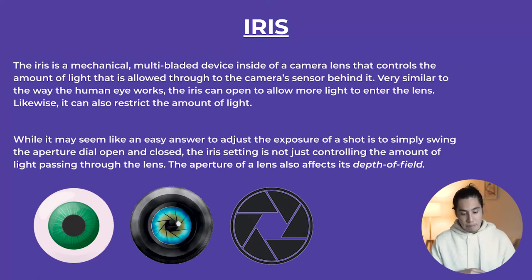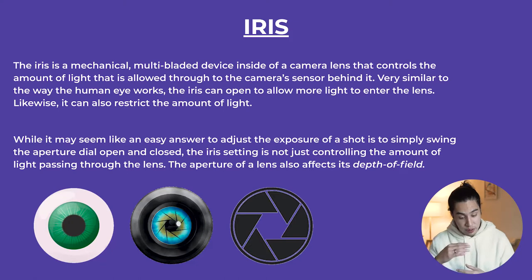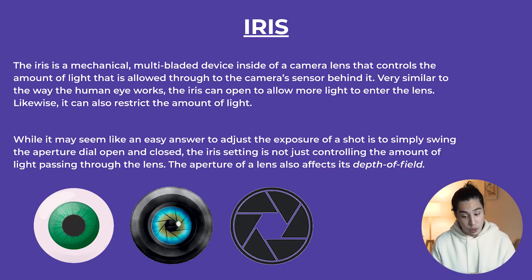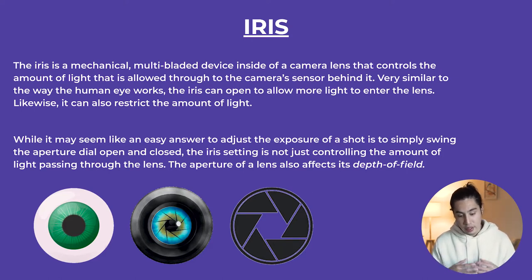The iris is a mechanical multi-blade device — we'll be going through this in a future lesson when we talk about prime lenses — but it's the multi-blade device inside a camera that controls the amount of light allowed through to the camera sensor behind it. It's very similar to the way the human eye works. The iris can open to allow more light to enter the lens, and likewise it can also restrict the amount of light.